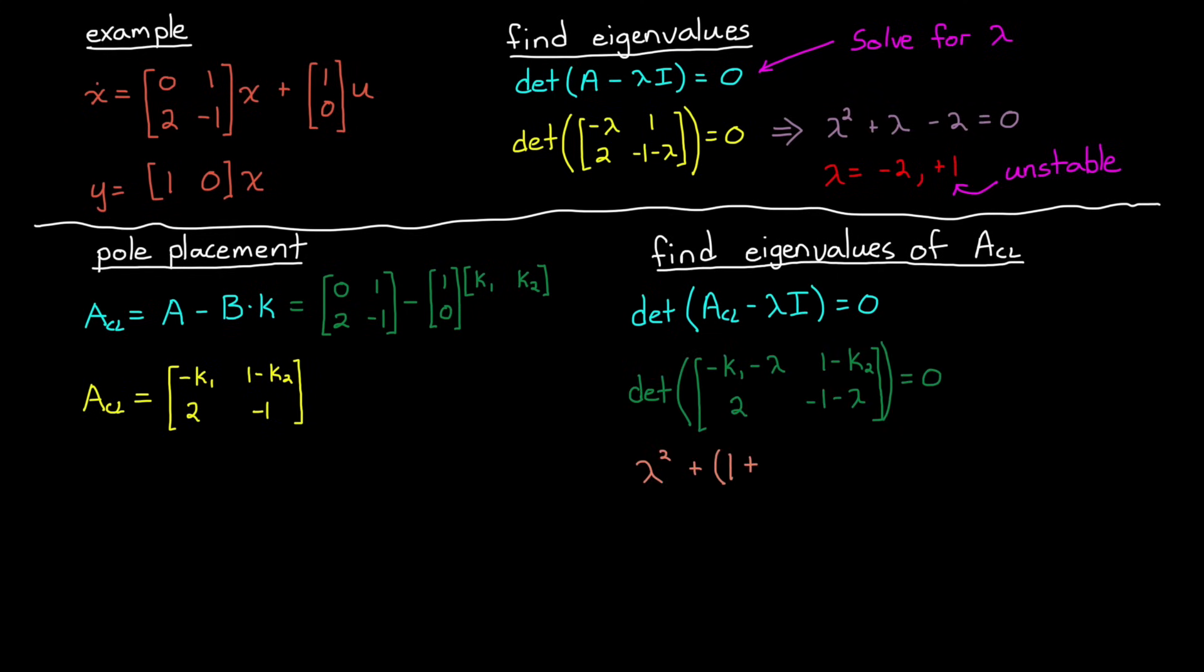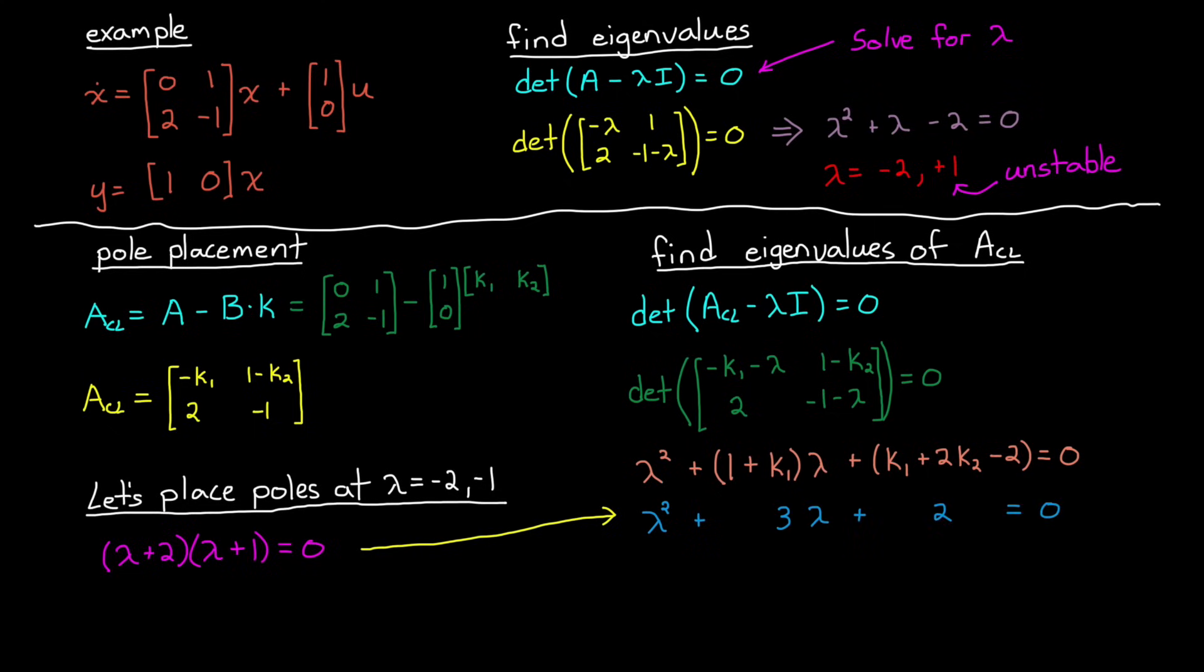and we get this characteristic equation that's a function of our two gain values. Now let's say that we want our closed loop poles at minus 1 and minus 2. In this way, the characteristic equation needs to be lambda squared plus 3 times lambda plus 2 equals 0. And at this point, it's straightforward to find the appropriate k1 and k2 that make these two equations equal. We just set the coefficients equal to each other and solve. And we get k1 equals 2, and k2 equals 1.